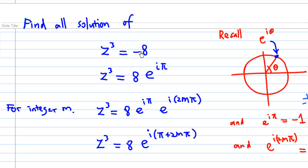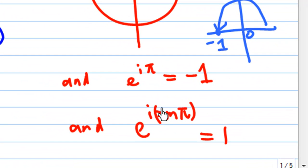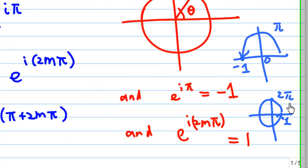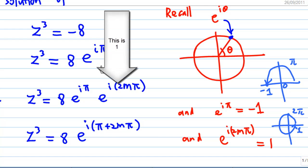And we know that e to the i 2m pi is equal to 1 because 2m pi for any integer m is a multiple of 2 pi and 2 pi means 360 degrees. e to the i 2m pi is 1 because the moment you draw the angle 2 pi, you find that the complex number is located at the point z equal to 1. That is why e to the i pi times e to the i 2m pi times 8 is equal to minus 8.